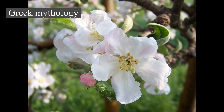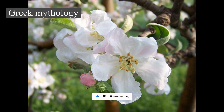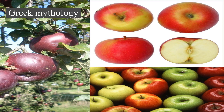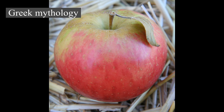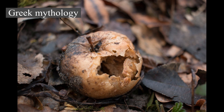Greek mythology. Apples appear in many religious traditions, often as a mystical or forbidden fruit. One of the problems identifying apples in religion, mythology, and folktales is that the word apple was used as a generic term for all foreign fruit other than berries, including nuts, as late as the 17th century. In Greek mythology, the hero Heracles, as part of his 12 labors, was required to travel to the garden of the Hesperides and pick the golden apples off the tree of life growing at its center. The Greek goddess of discord, Eris, became disgruntled after she was excluded from the wedding of Peleus and Thetis. In retaliation, she tossed a golden apple inscribed Kallisti — for the most beautiful one — into the wedding party.